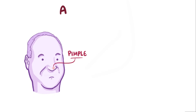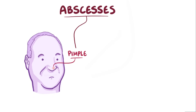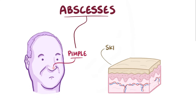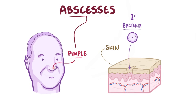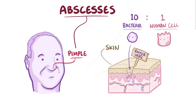Everyone who's ever had a pimple has had an abscess. Even though they're tiny, they're still abscesses. An abscess forms when normal tissue, like skin for example, is split apart and that new space is invaded by nearby pathogens like bacteria. There are roughly 10 bacterial cells for every one human cell, and they cover every surface of the human body. So any cut or break in the skin, or closed-off area within the body, is an invitation for bacteria to dive in and multiply.